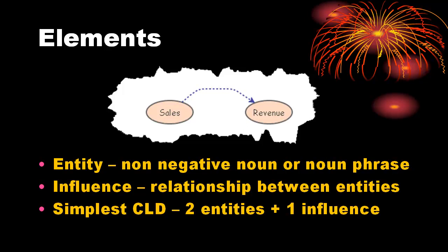There are two primary causal loop diagram notations: one using S and O for same and opposite, popularized by Peter Senge in The Fifth Discipline, and one using plus and minus for adds to and subtracts from.